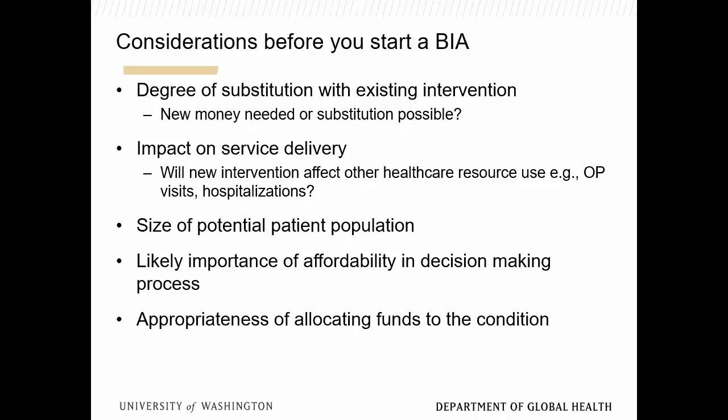You also need to consider whether the intervention impacts service delivery, affects other healthcare resource use like outpatient visits and hospitalizations, and the size of the potential population. For a huge population, you definitely need a budget impact. But for an orphan indication — a rare cancer with only a thousand patients in the US — the system can absorb that very easily even at a very high price.